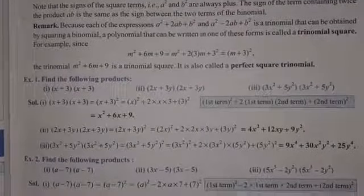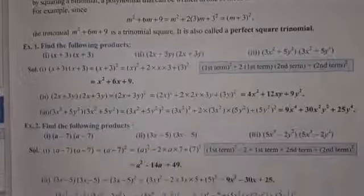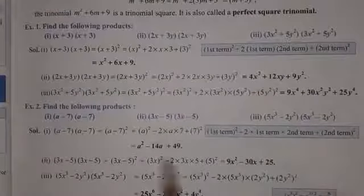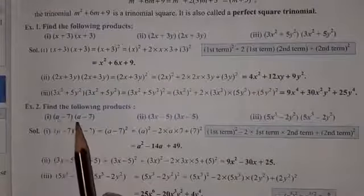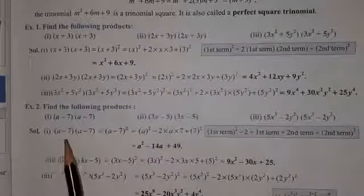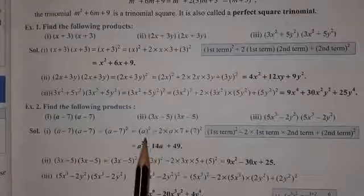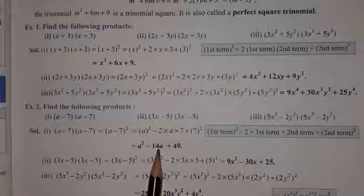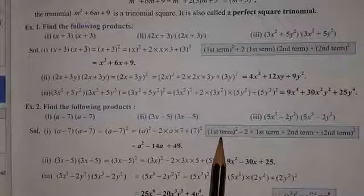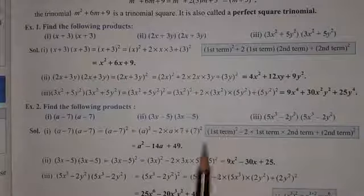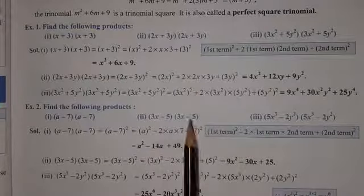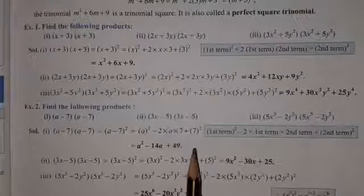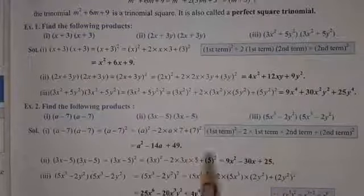Now example 2: 3 parts are given. Part one — a minus 7, into a minus 7. We will operate just like above, only the minus sign is different. So in the middle term we will get a minus sign. This is the rule for taking the square of a binomial with a minus sign. The examples are easy to understand, so I am not going to describe those in detail.